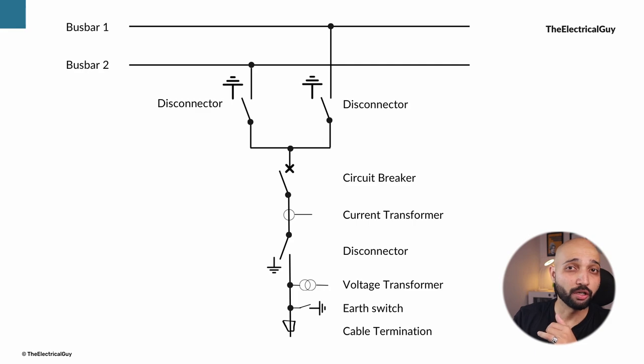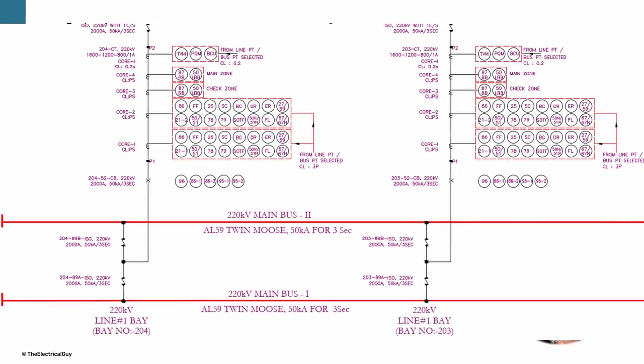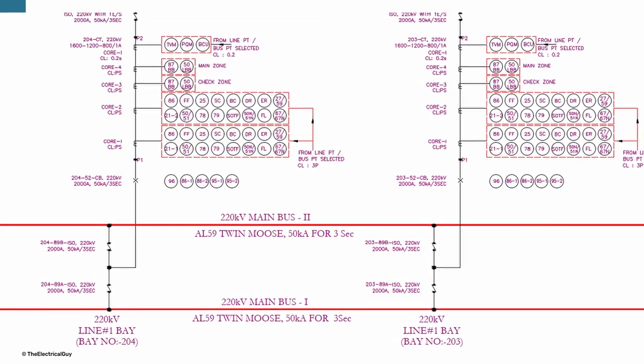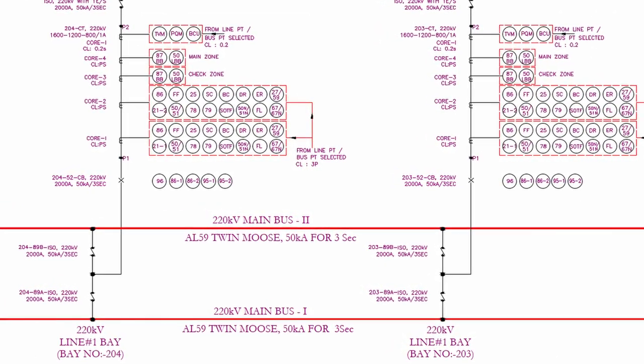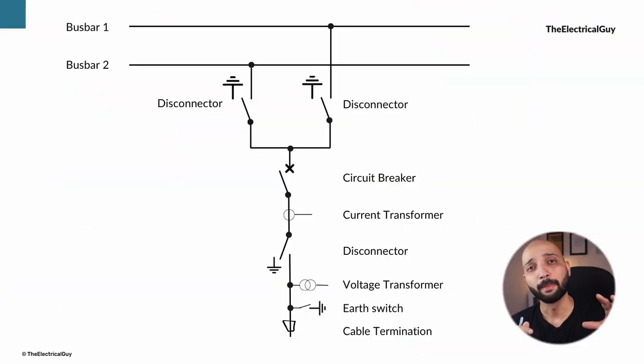It shows the correct location of CTs for different functions, the summation of CT windings, overlapping of protection zones, selection of voltage transformers, etc. can all be easily checked on the single line diagram. Details such as rated voltage, CT ratios, current ratings of switchgear and many other things are also included on these single line diagrams.